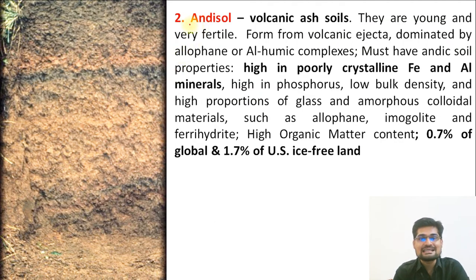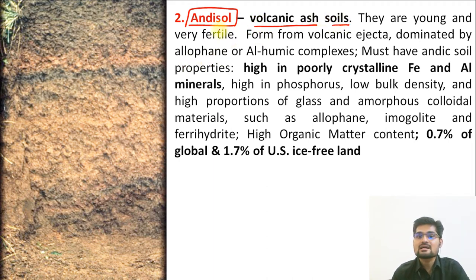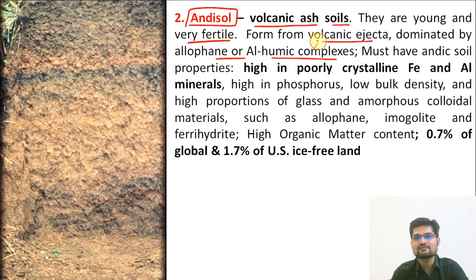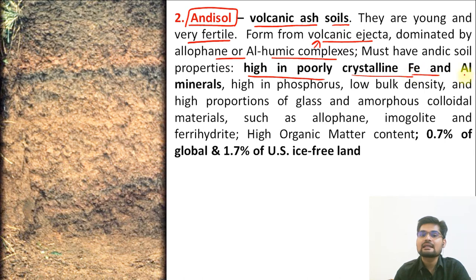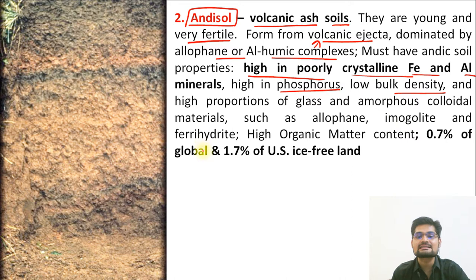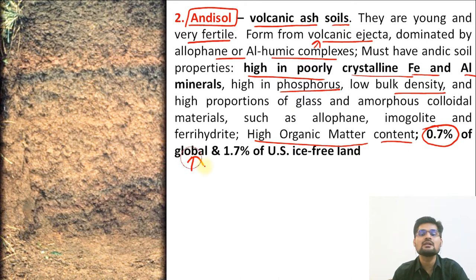The second order is Andisol — associated with the Andes mountains, volcanic ash, and soil. These are young and very fertile soils that form from volcanic ejecta dominated by allophane or alhumic complexes. They are high in poorly crystalline iron and aluminium minerals, high in phosphorus, low in bulk density, and high in organic matter content. They constitute about 0.7% of the global component.